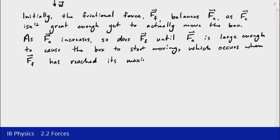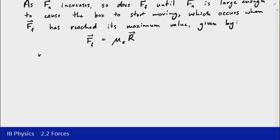And its maximum value is actually related to the normal force or the vector R that we represented on that diagram. And that maximum value is given by this equation. The frictional force here is going to be equal to this value μs multiplied by the normal force R. Now obviously μs is a new quantity, so let's explain what that is.